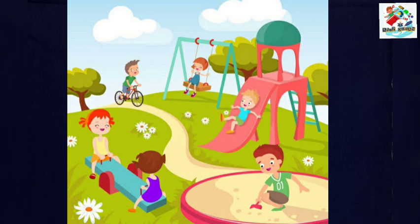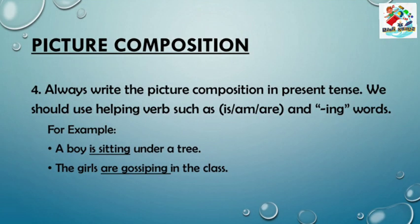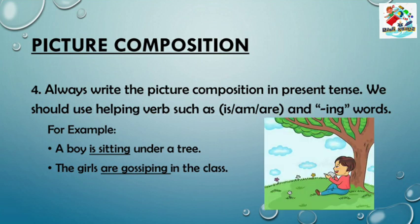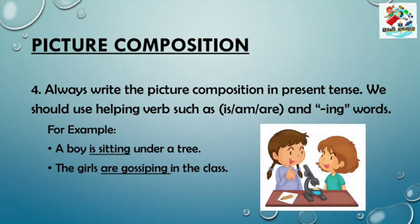I described all the main characters given in the picture. Now our fourth point is: always write the picture composition in present tense. We should use helping verbs — that is 'is' and 'are' — and '-ing' words in the sentence. For example: 'A boy is sitting under a tree,' 'The girls are gossiping in the class,' and so on.